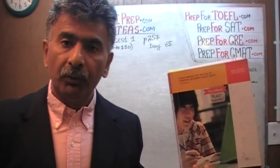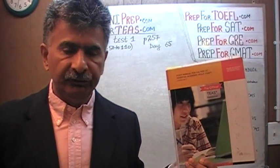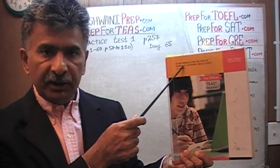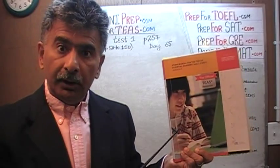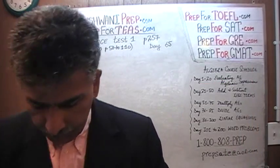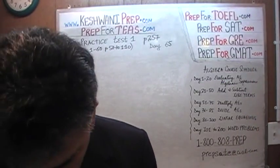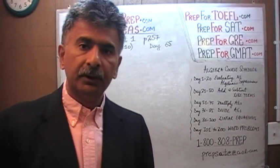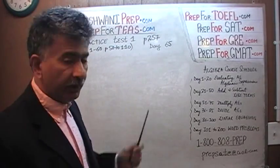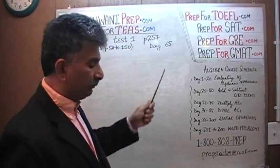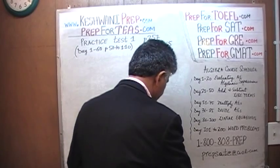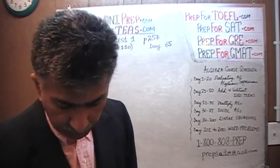We are here because we want to prepare for the T's. We have been solving math problems out of this book, the study manual for the T's. If you do not own this book already, purchase one immediately — you are going to need it. The problems we are about to solve are on page number 257. Please turn to it. Today is our lesson number 65. The very first problem on page 257 is problem number 11.